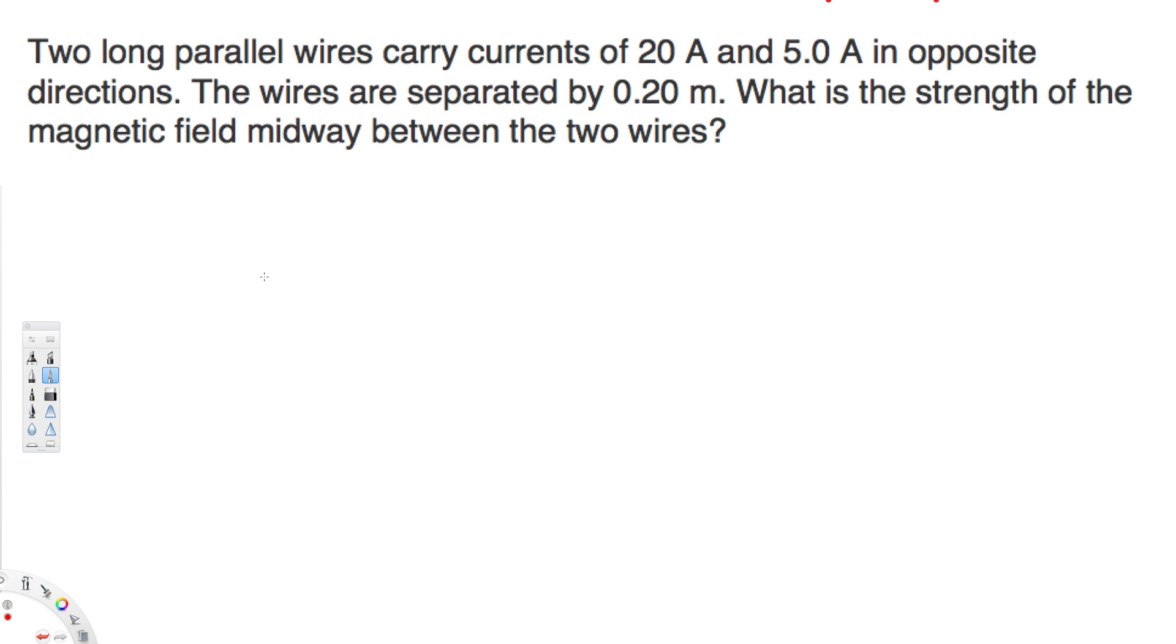What's going on guys, let's look at this problem right here. This question is asking: two long parallel wires carry currents of 20 amperes and 5 amperes in opposite directions. The wires are separated by 0.2 meters. What is the strength of the magnetic field midway between the two wires?